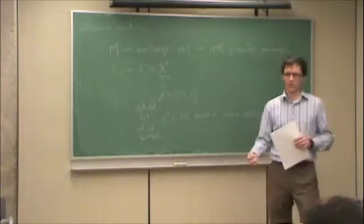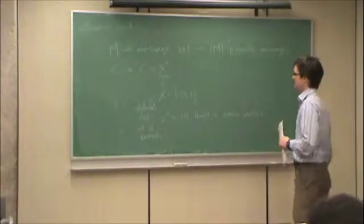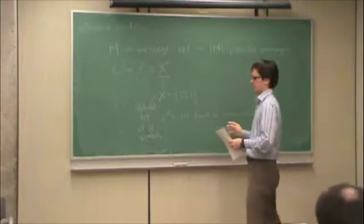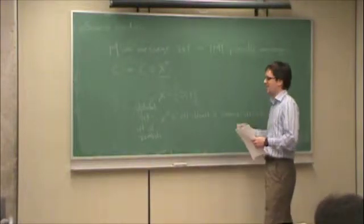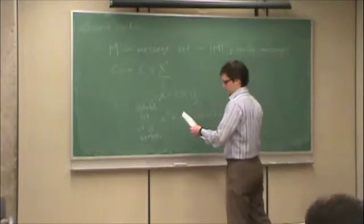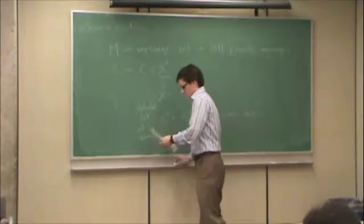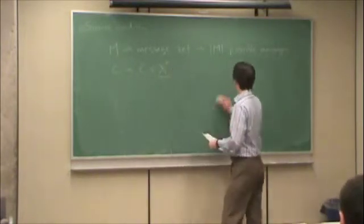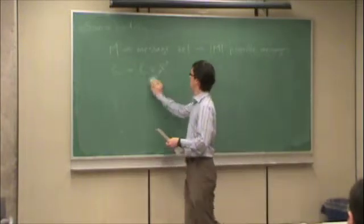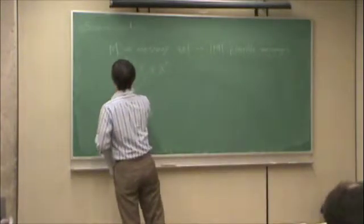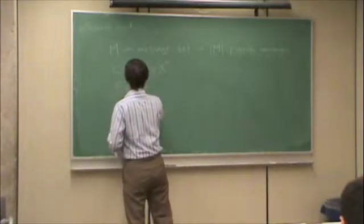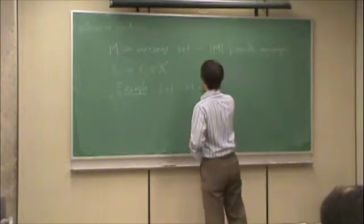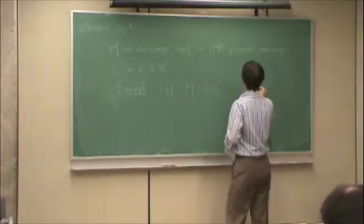Usually at the input to the channel, we'll allow certain symbols to be transmitted, and by taking vectors of such symbols, we'll be representing consecutive uses of that channel, which is quite practical. For example, let's let a set of possible messages be the digits 0, 1, and so on up to 9.